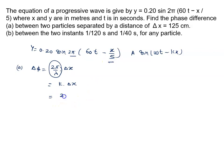x ka argument hai. It is 2 pi upon 5. Delta x is given to us, that is 125 centimeter. Convert to meters, so 125 by 100.